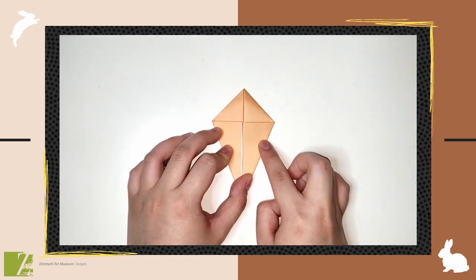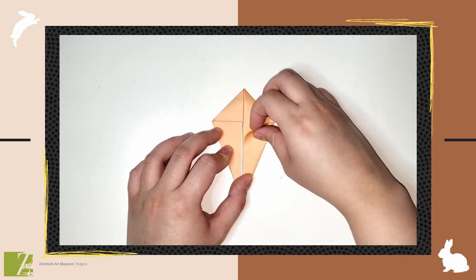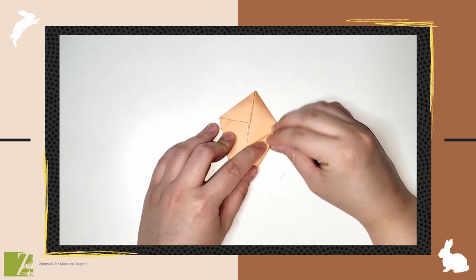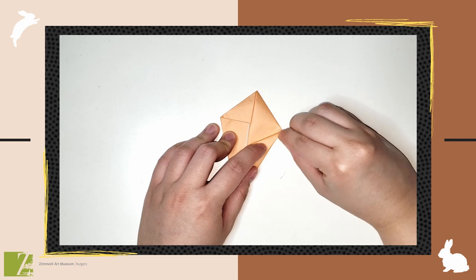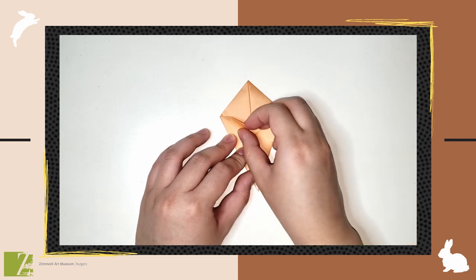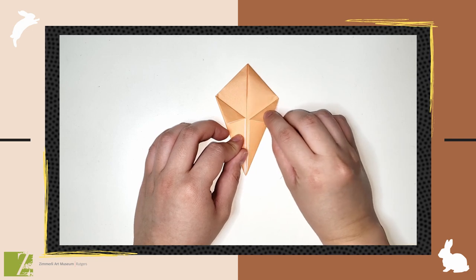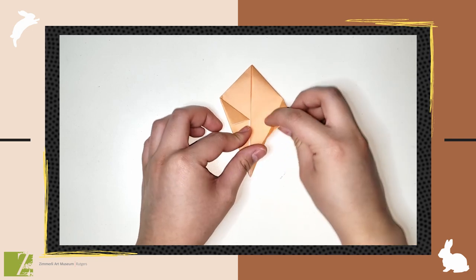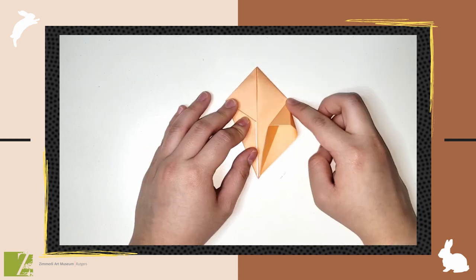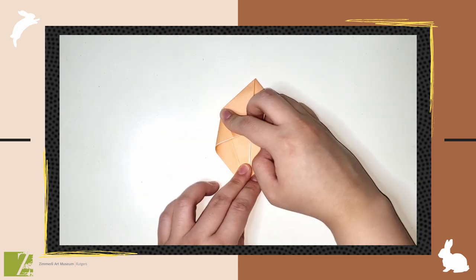Start with either flap, open it out to the outside, pressing the top of it down to form a slanted triangle. Repeat on the other side. Then, you're going to open the flap inside to make it flat, like this. Repeat on the other side again.